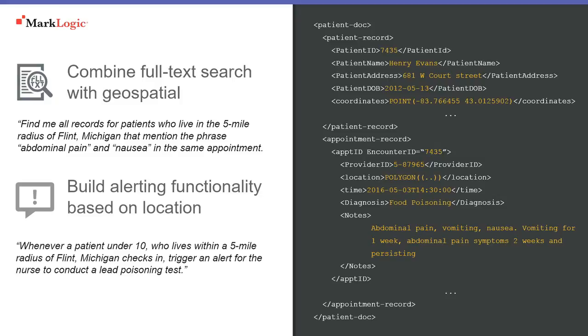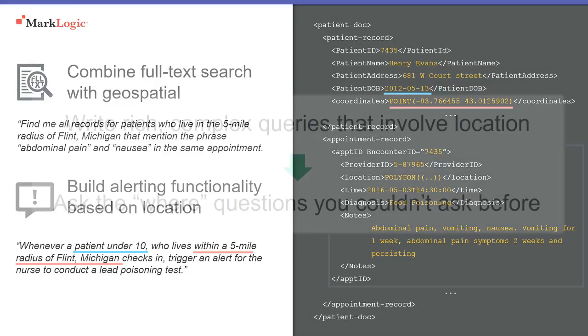Take that one step further with alerting, so we can build alerting functionality based on the location. So similar again, whenever a patient under 10, of course, this is a date range query. So we've got the date of birth, so we've got functions that can allow range queries on that data. Geospatial query, whether someone's within five miles of that particular location again. And here's the significant bit. So here we trigger an alert for a nurse to conduct a lead poisoning test. So we've got operational data, which is both geospatial text, which doctors might be putting into the system in near real time, linking into, via triggers, operational business processes, which can then be invoked in real time. So it's a really powerful integrated solution, which combines all of those data and queries.